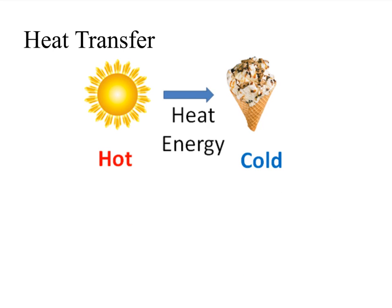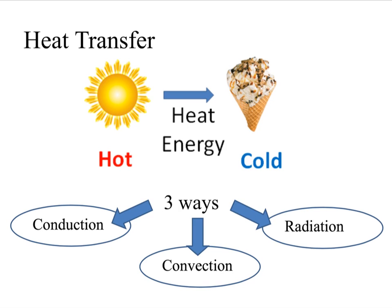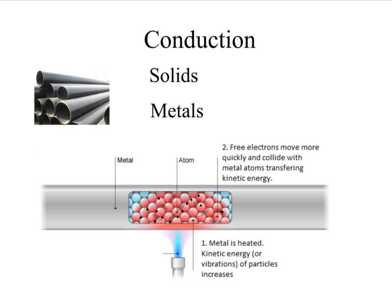As we've already mentioned, the direction of flow of heat energy is always from hot to cold. But there are in fact three ways in which heat can travel: via conduction, convection and radiation. We're going to look at all three. We'll start with conduction.